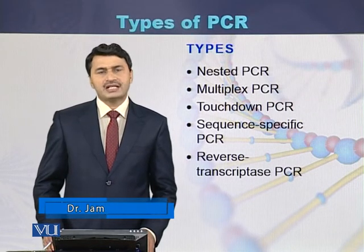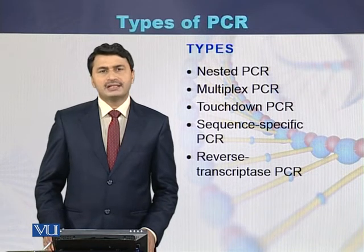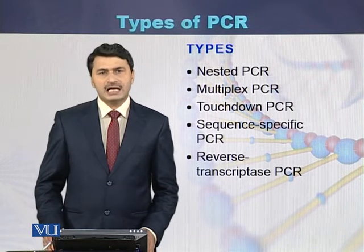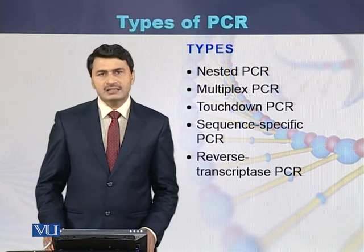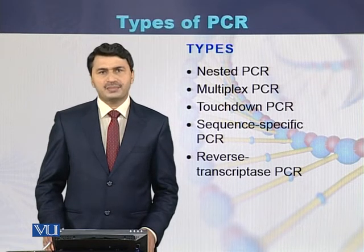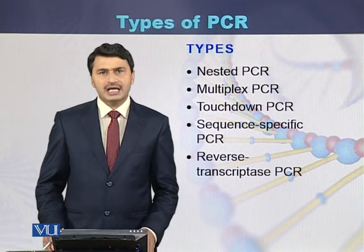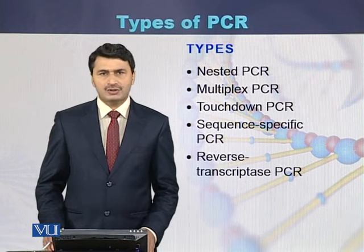The next type of PCR is called multiplex PCR. In multiplex PCR, several amplicons are amplified simultaneously within a single reaction. This means there are different primer pairs that bind to different regions on the DNA or genome, and they produce different amplicons.